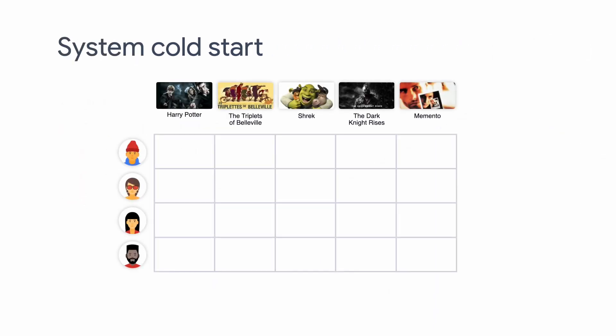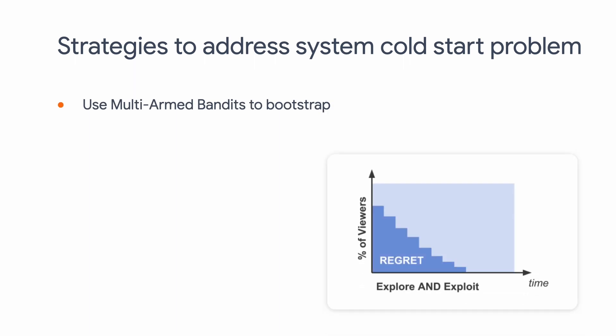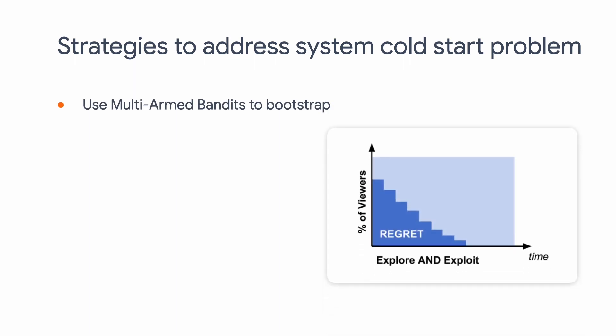The last kind of cold start is System Cold Start. System Cold Start is when you are starting from scratch and there is zero interaction between users and items. While System Cold Start is even more challenging, you could leverage some of the techniques already mentioned to bootstrap — for example, use content-based filtering extensively. Another way to tackle System Cold Start is to use reinforcement learning. We discussed specifically how to use multi-armed bandits with TF Agents to explore and exploit at the same time in a previous video — feel free to go back and review that.